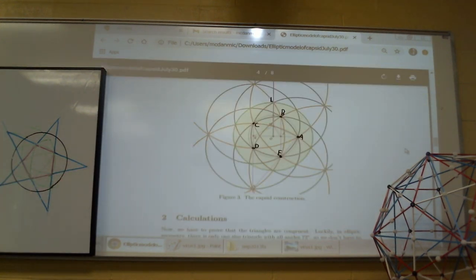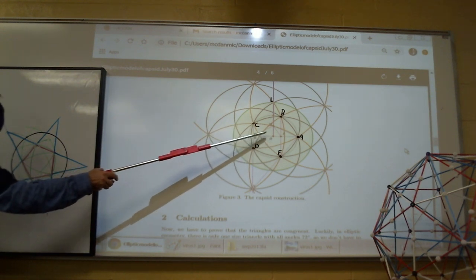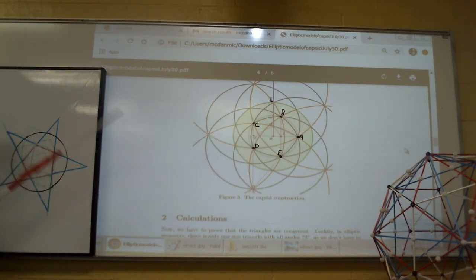We use the vertices of the pentagon A, B, C, D, E as centers of circles through opposite consecutive vertices. Drawing in segments from O to each vertex gives us five inner elliptic triangles, which are regular with angles 72 degrees.